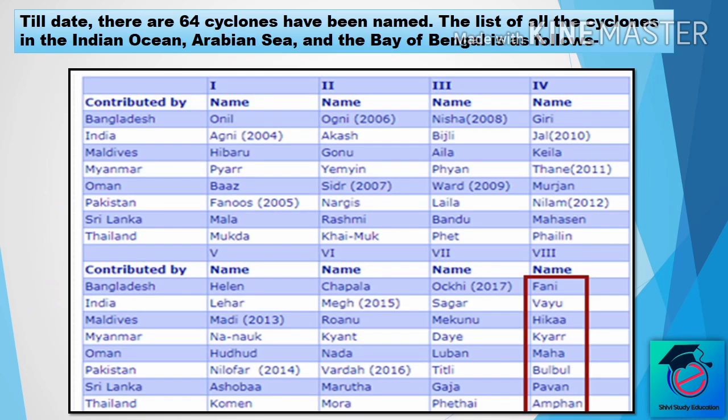As additional information, till date there are a total of 64 cyclones that have been named. The list covers all cyclones in the Indian Ocean, Arabian Sea, and the Bay of Bengal.